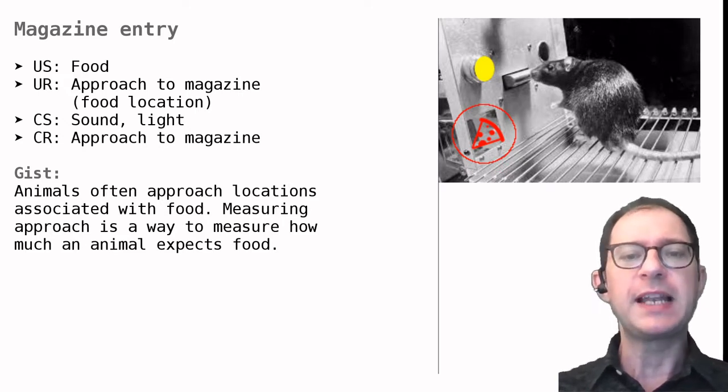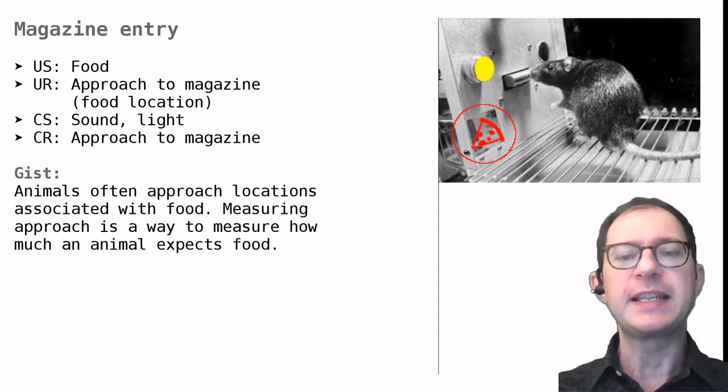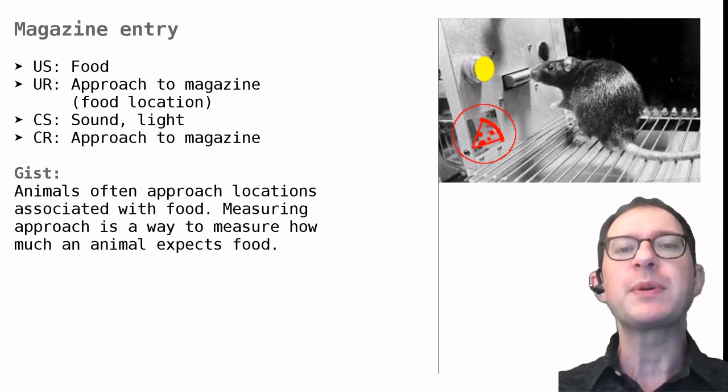When the rat learns that the light signals food it starts to check the magazine even before the food comes. The more the rat expects the food the more often it will check the magazine to see if the food is there. This means that we can measure how many times the rat sticks its head in the magazine as an index of how well it has learned that the light signals food. This is the magazine entry preparation.